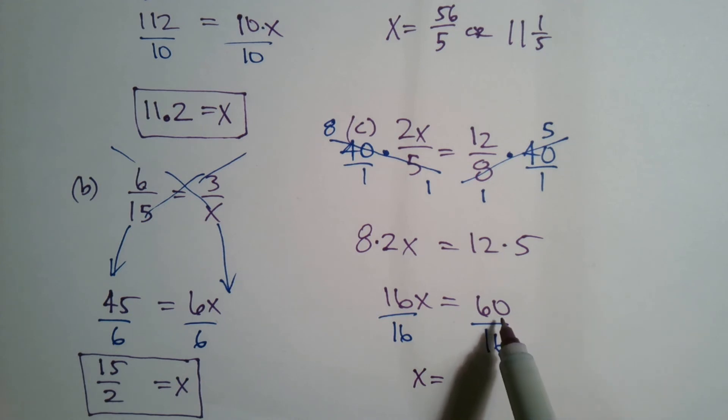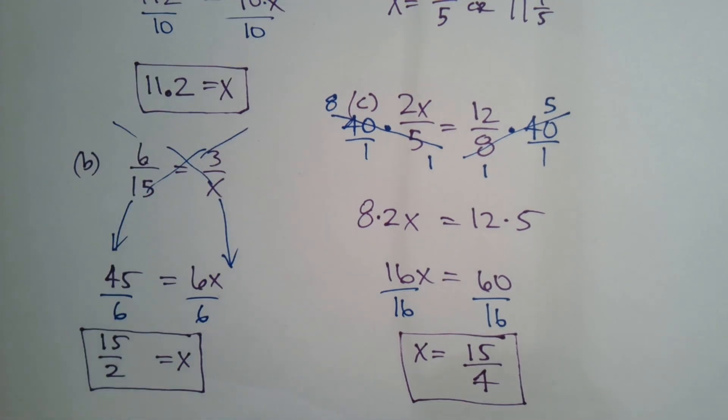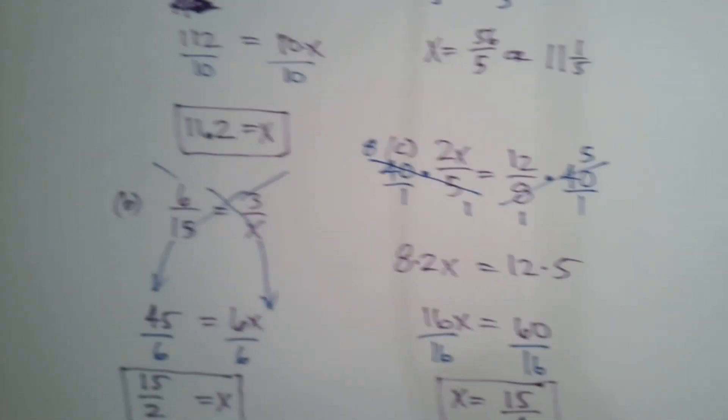And then at that point, divide both sides by 16 and you have X is equal to—well, let's see, that can simplify. What goes in, four? Four goes into 60, 15 times. Four goes into 16, four times. So it becomes 15 fourths. You can leave the answer like that, or you can write it as three and three fourths.